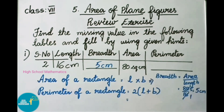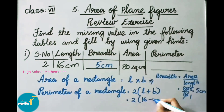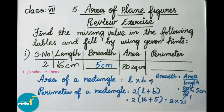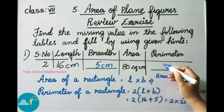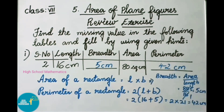Now we have both length and breadth. Let us find the perimeter: 2 × (length + breadth) = 2 × (16 + 5) = 2 × 21 = 42 centimeters. Therefore, the perimeter of the rectangle is 42 centimeters.